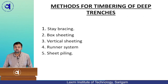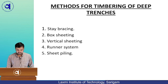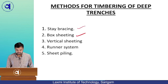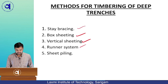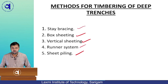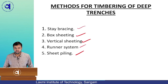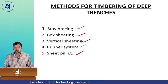There are five methods of timbering: first is stay bracing, second is box sheeting, third is vertical sheeting, fourth is runners, and fifth is sheet piling. We will see all these methods one by one, including where they are used and what type of soil they are suited for.